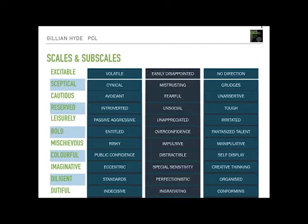The next table shows all 11 HDS scales on the left, with three subscales delineated for each — 33 subscales in total. There isn't time to go through all of these, so I'll take one example from each of the three main clusters.